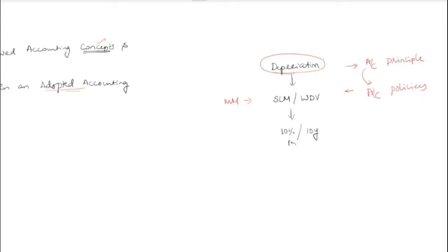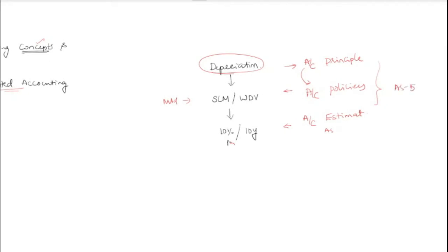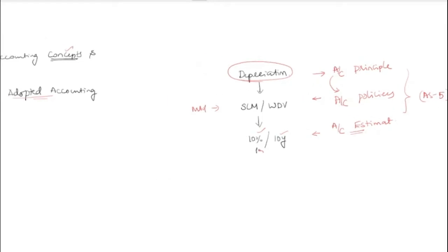Why 10% and not 15% or 20%? As an entity, you believe this asset is useful for 10 years, or that every year the asset will reduce in value by 10%. This is based on your estimate — therefore it is called an accounting estimate. As per AS5, this segregation into principle, policy, and estimate has been established.